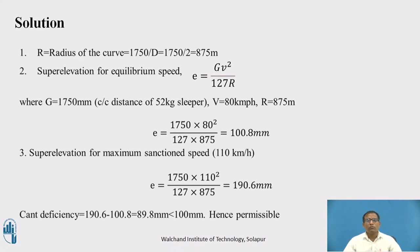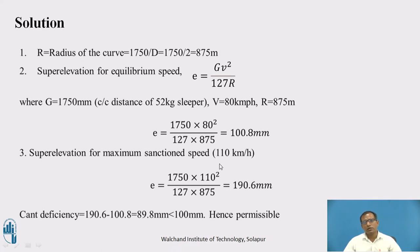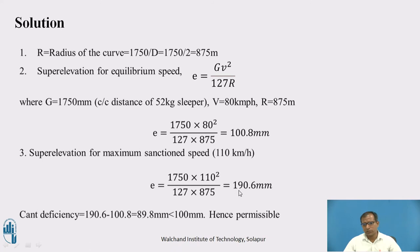Next, calculate the theoretical super elevation for the sanction speed of 110 kmph. Changing only the V value in the formula, the theoretical cant for the sanction speed comes to 190.6 mm.